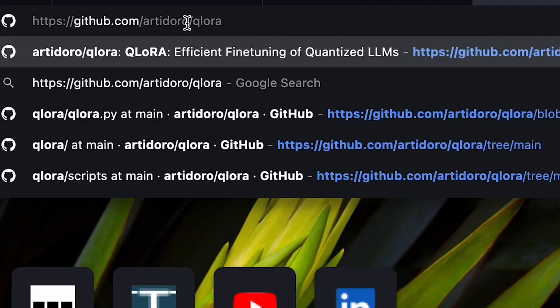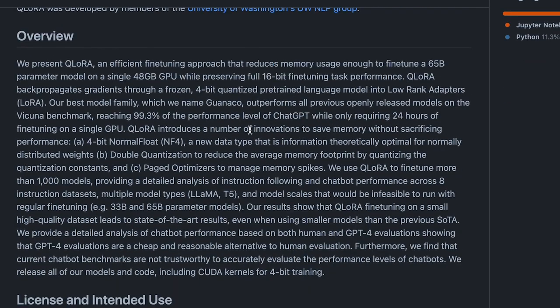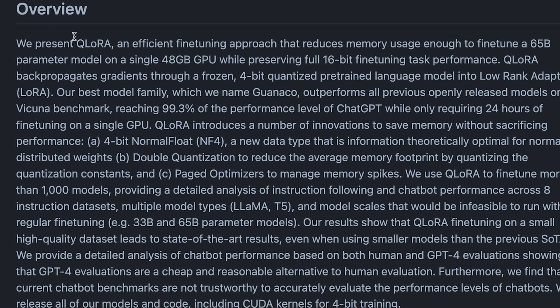If you haven't seen QLoRA before, if you go to github.com and go to artadoro/qlora, you will get all of the details about the QLoRA project. There is a paper you can read. Essentially, QLoRA is an efficient fine-tuning approach that reduces memory usage enough to fine-tune a 65 billion parameter model on a single 48 gigabyte GPU.